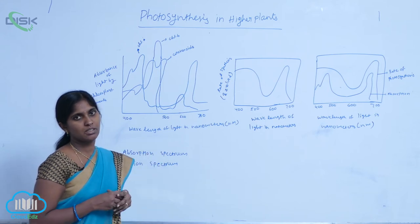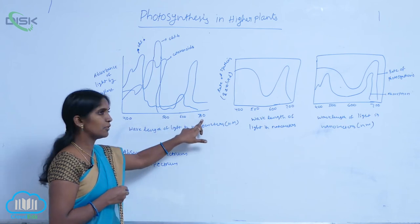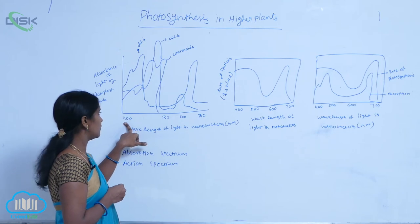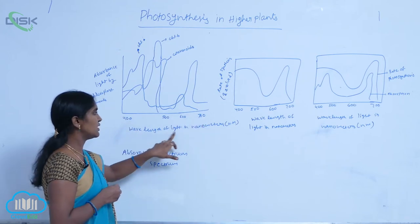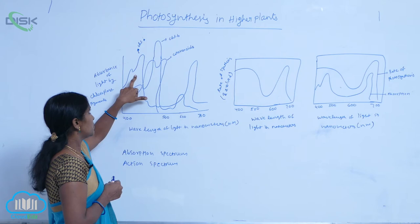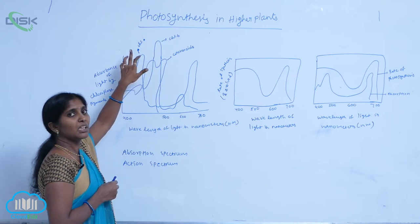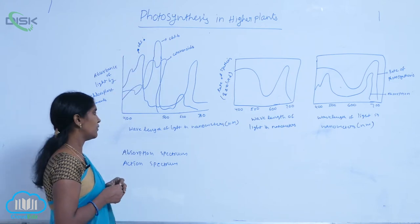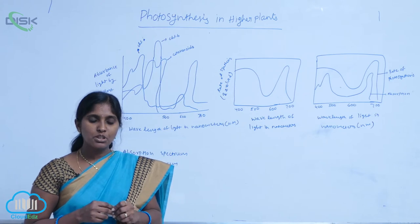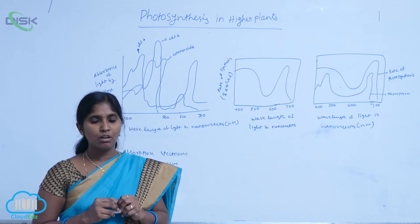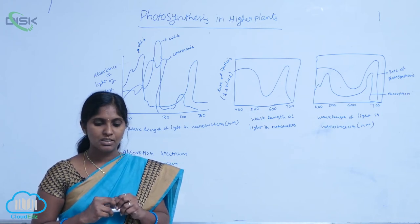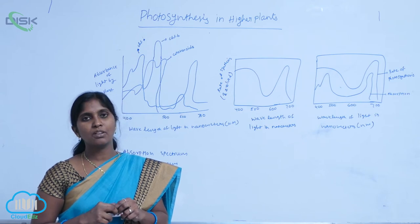At what wavelength? You are seeing here the nature of the light — it is visible light, given here between 400 to 700 nanometers. At what wavelength is the absorption of light at peak by pigments? That is given in the form of absorption spectrum. Absorption spectrum is the graphical representation of light absorption by photosynthetic pigments as a function of wavelength of light.